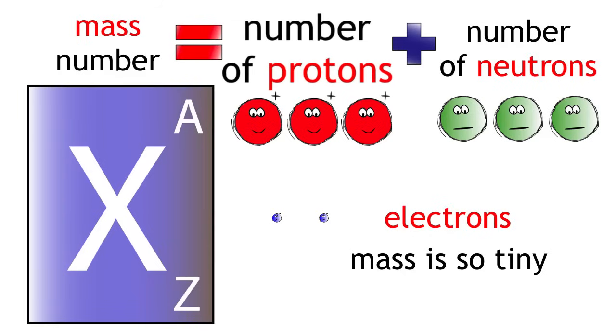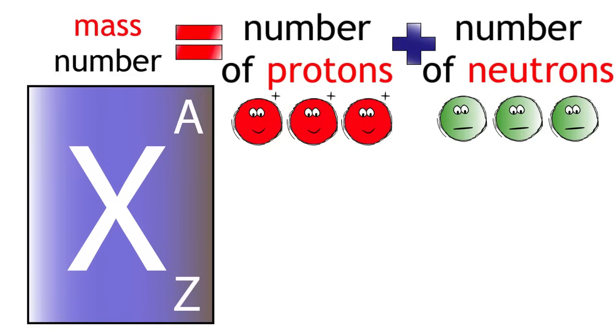If the number of protons always stays the same in a particular element and we are ignoring the mass of electrons, it must mean the number of neutrons is causing the difference in mass.